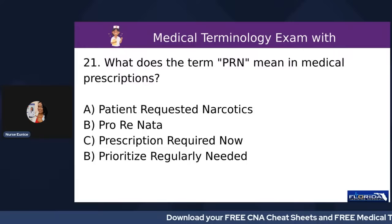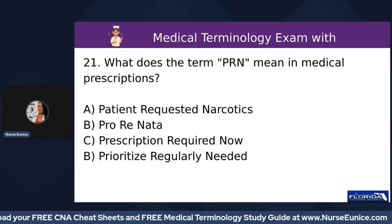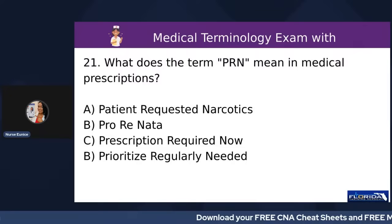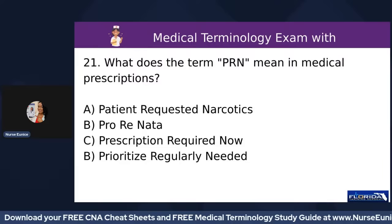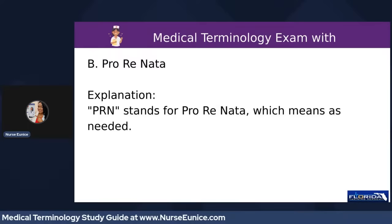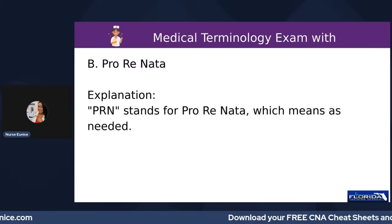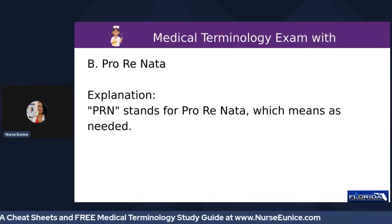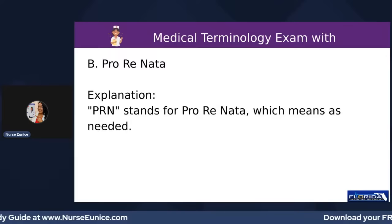Number twenty-one: what does the term PRN mean in medical prescriptions? A) Patient Request Narcotics, B) Pro Renata, C) Prescription Required Now, or D) Prioritize Regularly Needed. PRN means 'as needed' — it comes from the Latin 'pro re nata.' The answer is B, pro renata, though in practice we simply say 'as needed.'